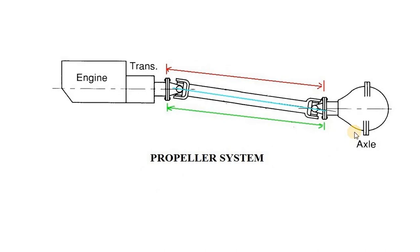दोनों को जोड़कर हमारा joint complete हो जाएगा। जो हमारी propeller shaft gearbox से differential के साथ जुड़ी होती है, वो एकदम सीधी नहीं होती — एक side से up होती है, एक side से थोड़ी down होती है। क्योंकि rear axle थोड़ा पीछे से down होता है और gearbox की height थोड़ी ऊपर होती है। इसीलिए universal joint की मदद से यह fix की गई होती है। यह था हमारा propeller shaft और front व rear axle का अध्ययन।